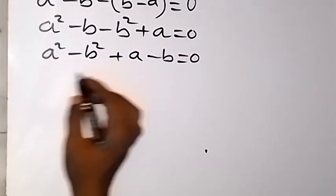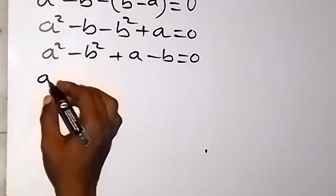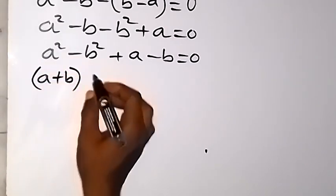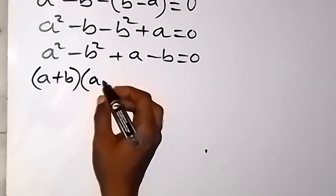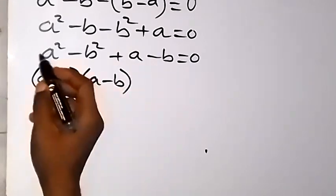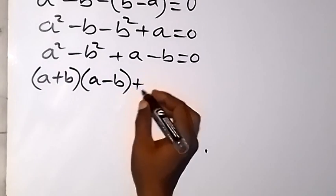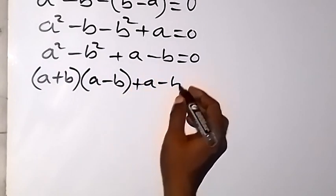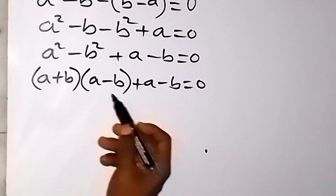We write a² minus b² as (a + b)(a - b), so the expression becomes (a + b)(a - b) plus (a - b) equals 0.